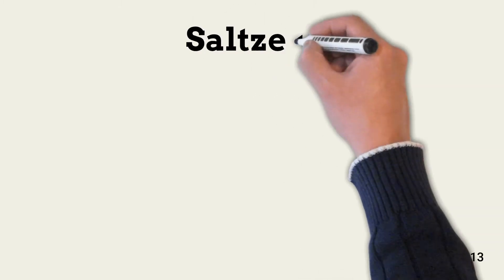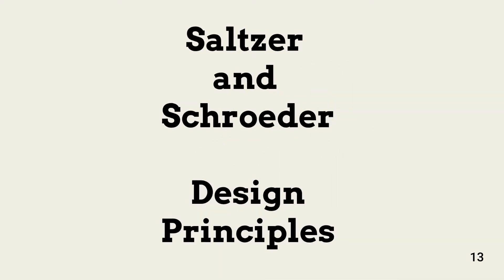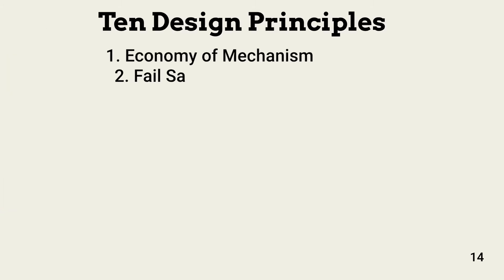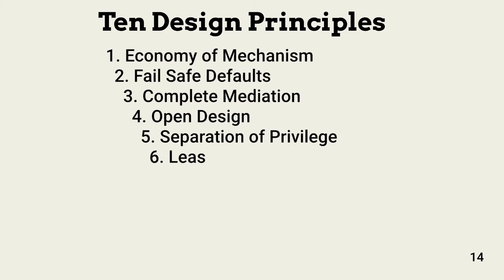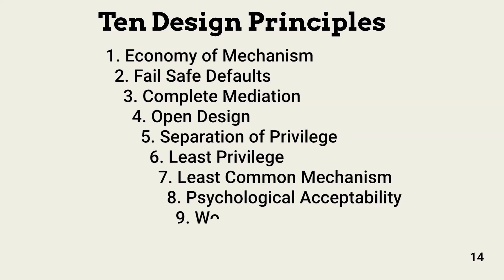Now we begin our look at the two sets of design principles. First, we explore the design principles as defined by Salzer and Schroeder, or the protection of information in computer systems principles. Salzer and Schroeder described 10 principles: economy of mechanism, fail-safe defaults, complete mediation, open design, separation of privilege, least privilege, least common mechanism, psychological acceptability, work factor, and compromise recording.